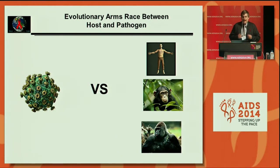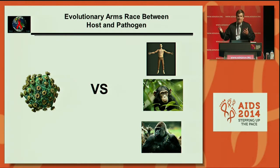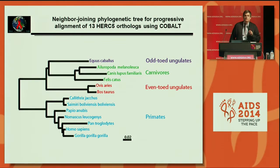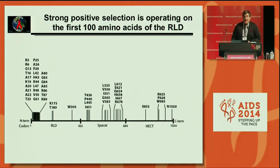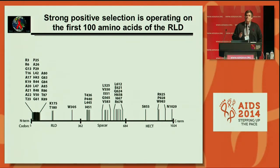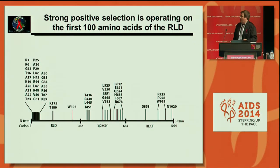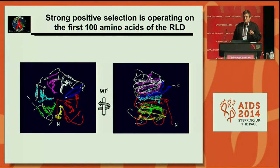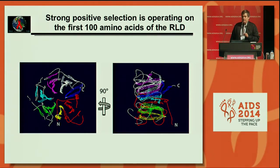Antiviral proteins are in an evolutionary arms race with viruses, constantly changing to keep pace with viral evolution — this is termed positive selection. We analyzed 13 HERC5 orthologs across approximately 75 million years of evolution and found that HERC5 is under strong positive selection. A diagram of the HERC5 protein shows numerous amino acids undergoing positive selection, with a particularly strong cluster in the RLD domain. We deleted this positively selected region and confirmed it was the region responsible for inhibiting REV-dependent RNA export.